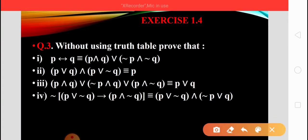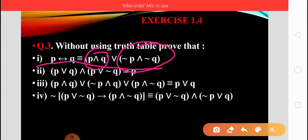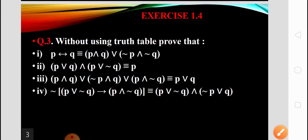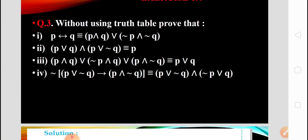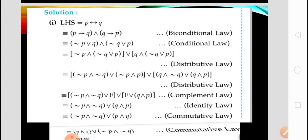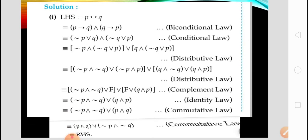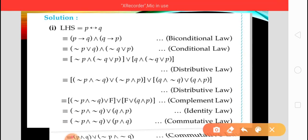See the first question here. P double implies Q is equivalent to (P conjunction Q) disjunction (negation of P conjunction Q). For this we consider one side and using that side we prove the other side. When LHS equals RHS, both statements are logically equivalent. So we consider the LHS, which is P double implication Q.